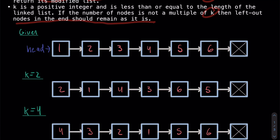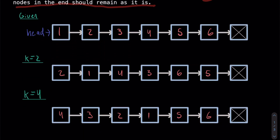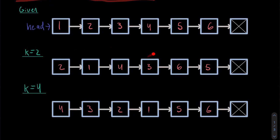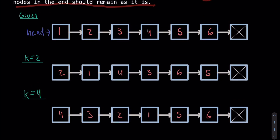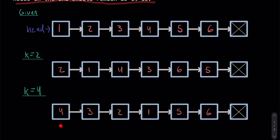For example, if we're given the list 1, 2, 3, 4, 5, 6 and K is 2, we reverse pairs to get 2, 1, 4, 3, 6, 5. If K is 4, we reverse the first four nodes to get 4, 3, 2, 1 and leave 5 and 6 unchanged, because 4 is not a multiple of 6. So we get 4, 3, 2, 1, 5, 6.